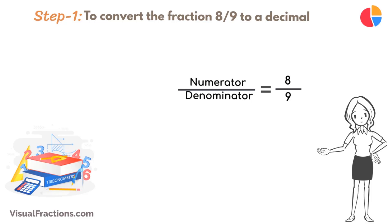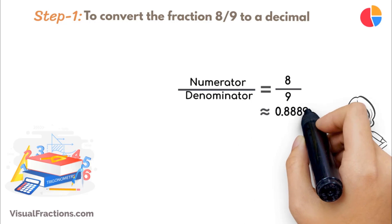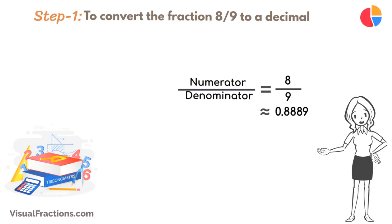Using a calculator, the answer we get is approximately 0.8889, which is a repeating decimal. But let's perform this division by hand using long division.